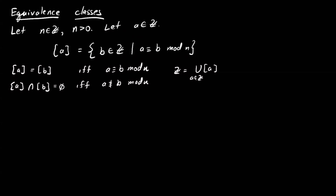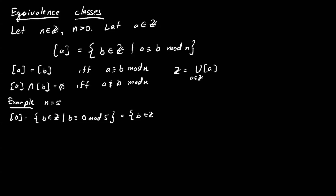What do these equivalence classes look like? Give me some examples. Let's fix n equal to 5. What's the equivalence class of 0? These are all the integers b in Z such that b is equivalent to 0 mod 5, i.e., all integers b such that 5 divides b minus 0, or simply 5 divides b. So these are all the integers that are multiples of 5.